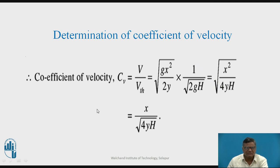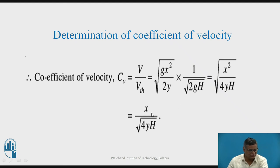Now the coefficient of velocity = actual velocity v / theoretical velocity. Substituting the values: Cv = √(gx²/2y) / √(2gH) = √(x²/4yH) = x / √(4yH).